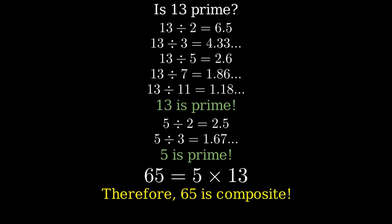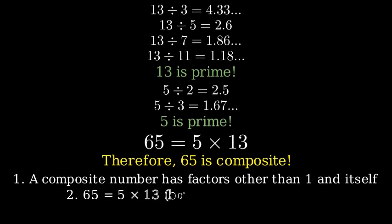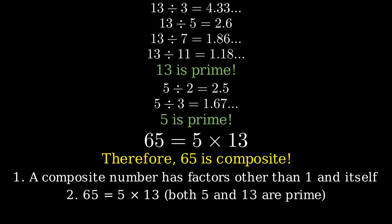Let's summarize what we learned. A composite number is a number that has factors other than 1 and itself. We found that 65 can be written as 5 times 13, where both 5 and 13 are prime numbers.